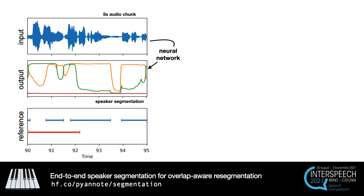Although we do use a large amount of labeled conversations from the DIHARD, AMI, and VoxConverse datasets, the neural network is trained in a way that is independent of the actual identity of the speakers.